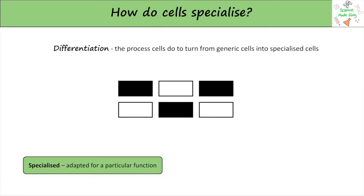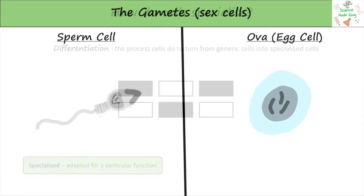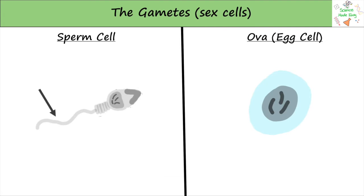Some examples of specialized cells are the gametes. The sperm cell has a tail at the back to help it move. It also has a haploid nucleus, meaning it has half the number of chromosomes. All other cells are diploid, meaning they have the full number of chromosomes. Having a haploid nucleus means that when the gametes fuse together to form a zygote, it has the full number of chromosomes.